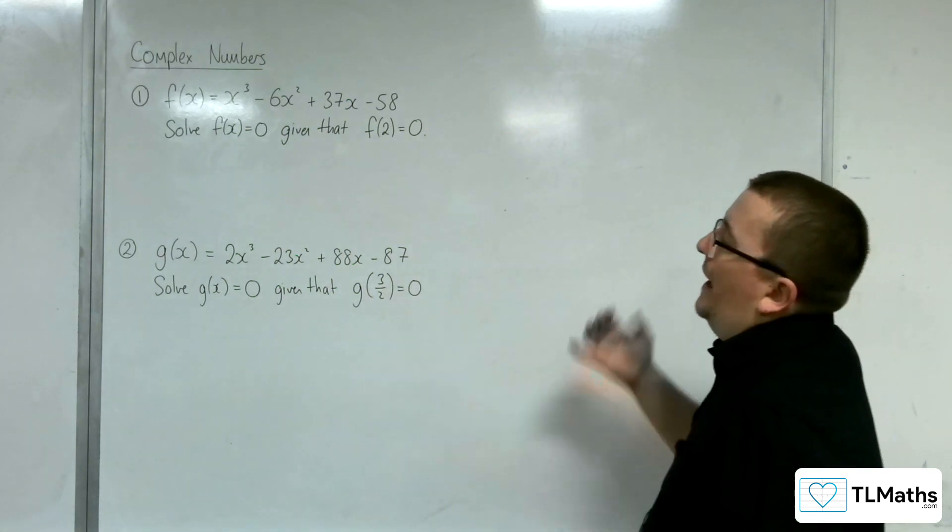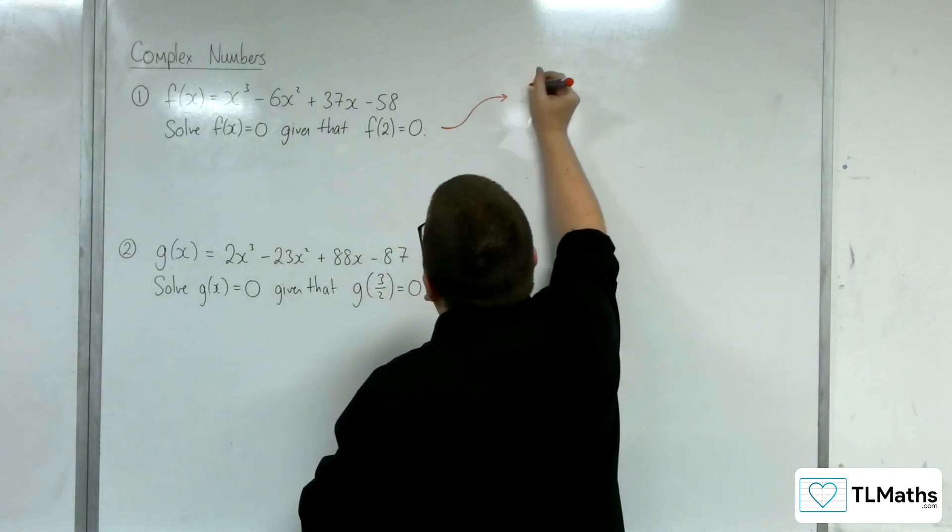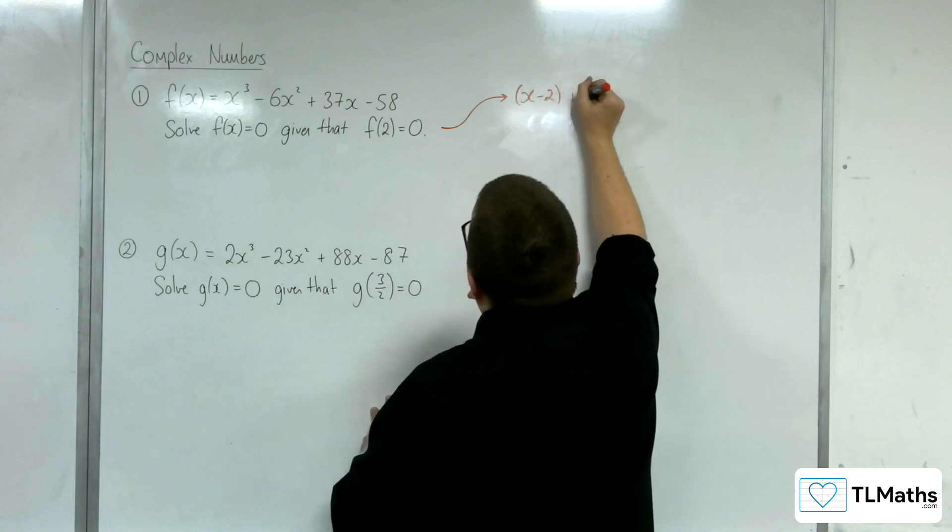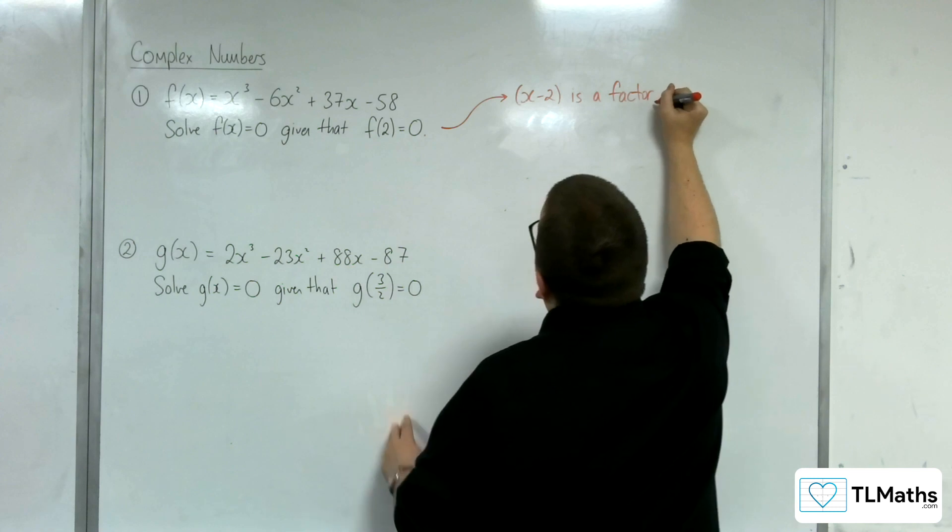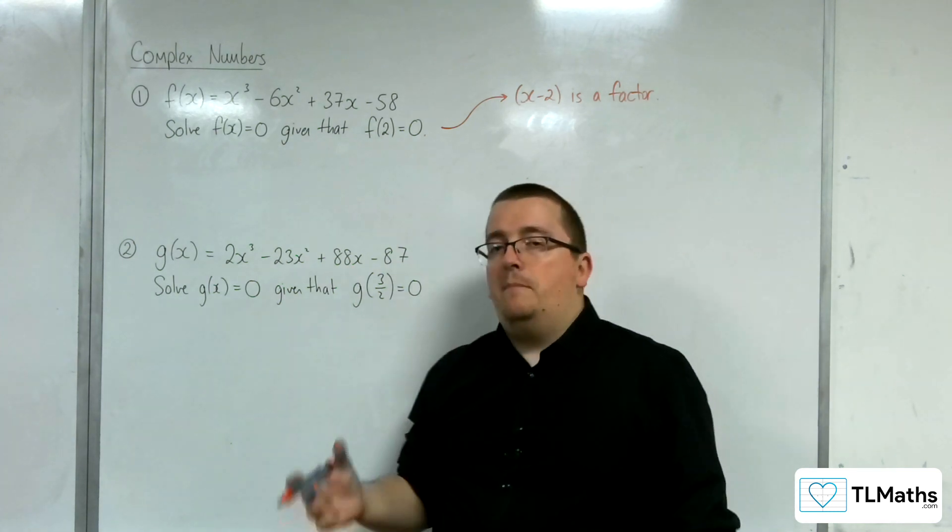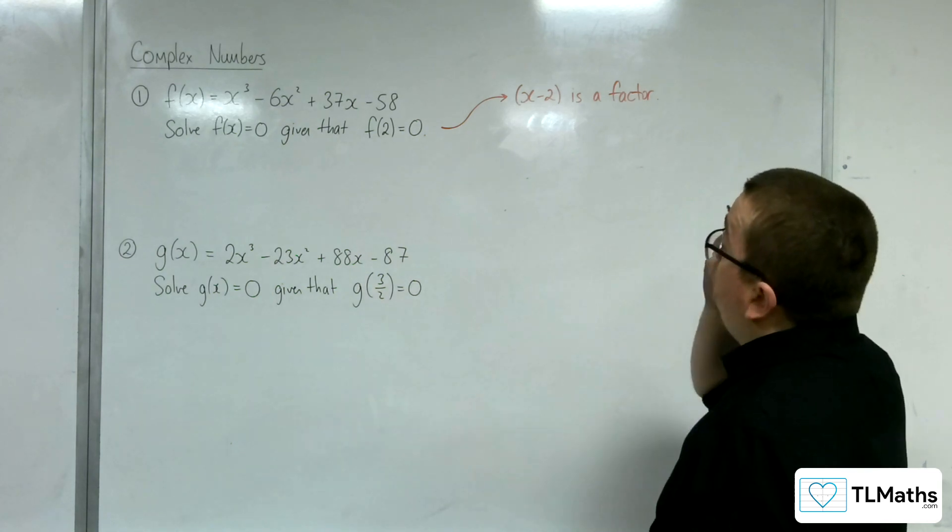So, that means that as f(2) = 0, this means that (x - 2) is a factor. This is the factor theorem at play. The factor theorem is met in A-level maths if you haven't come across it yet.